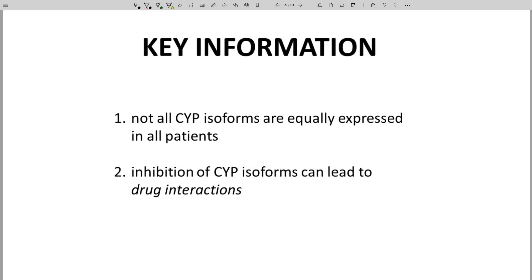Why go through all this work on metabolism and inhibition? On the screen are two ideas. Idea number one: not all CYP isoforms are equally expressed in all patients. If your lead is metabolized by an inconsistently expressed isoform, then your lead will likely show variable clearance and therefore variable half-life.